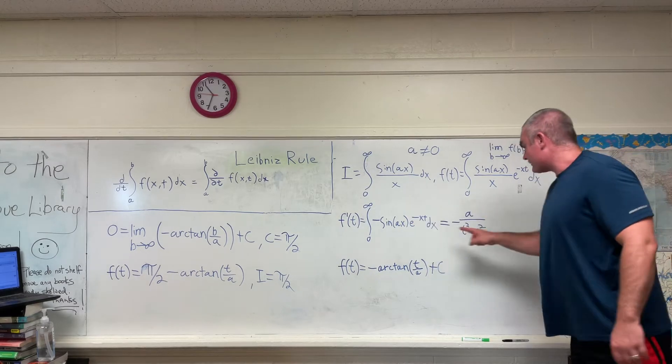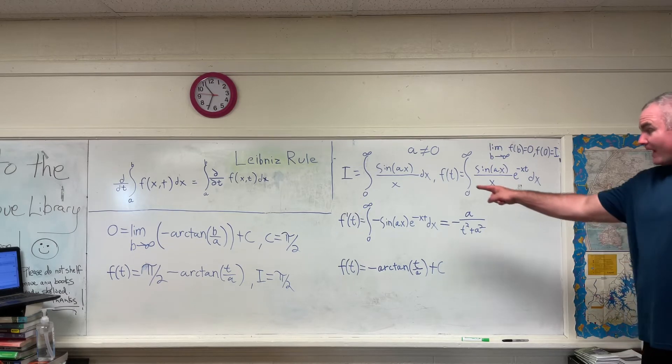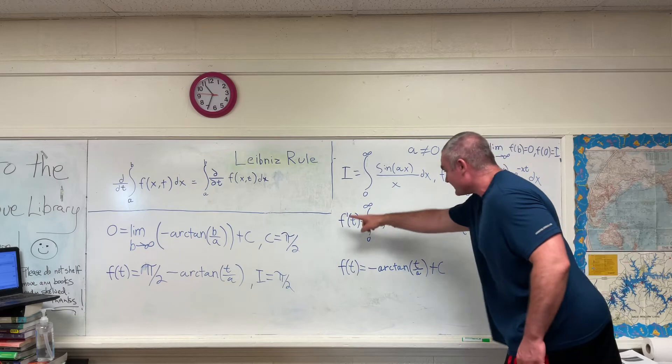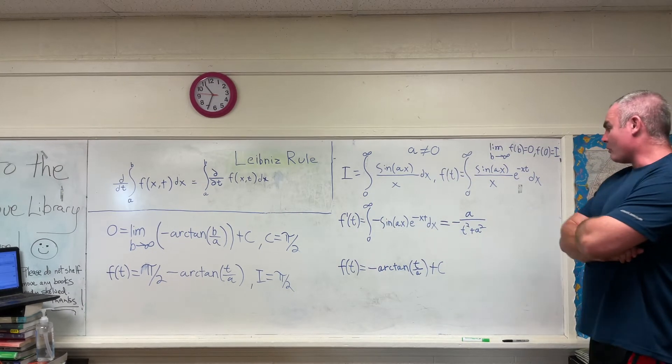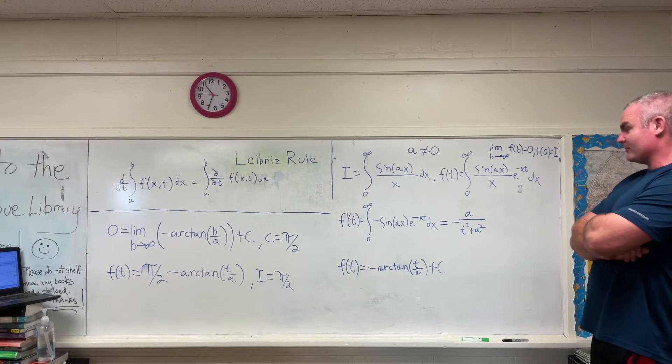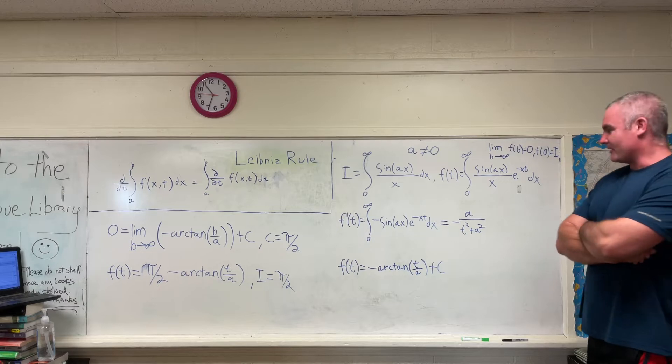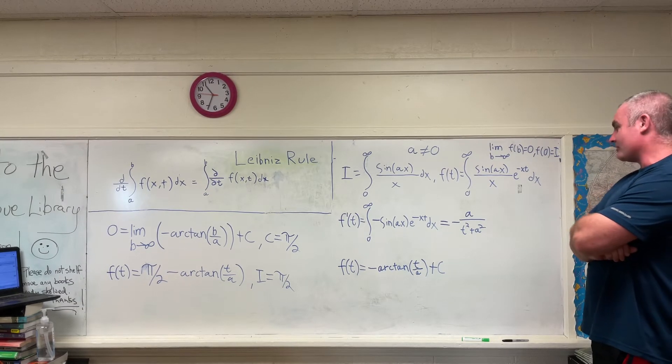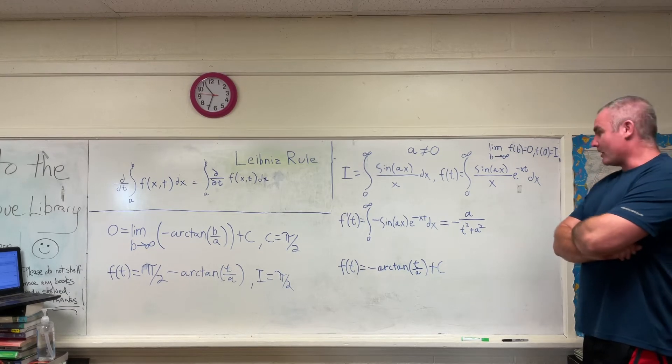Now getting from there to there requires some work, but if you evaluate this integral right here, I'm sure all of you can do it. It's about a 20-minute integral, 10 if you're good. It requires integrating by parts twice, and then I believe it's called a Phoenix integral because you actually get back your original integral after integrating by parts twice. Go ahead and do it and see what I mean.